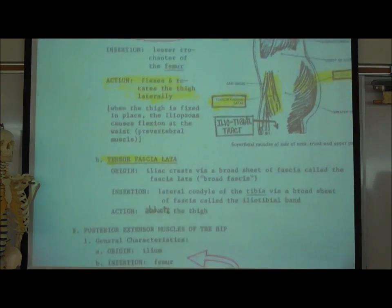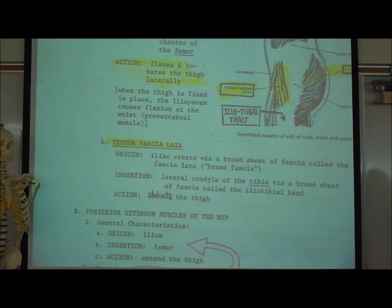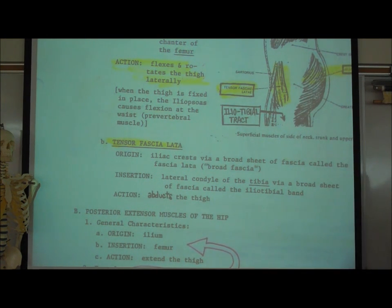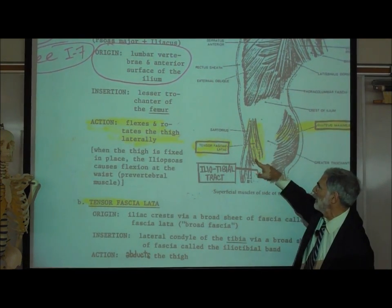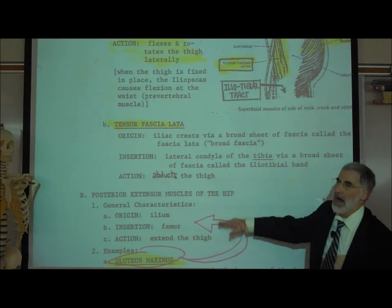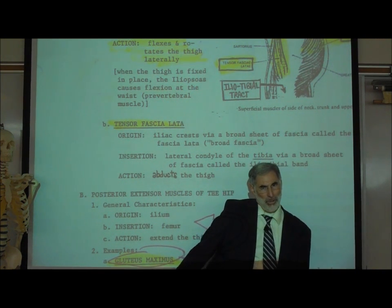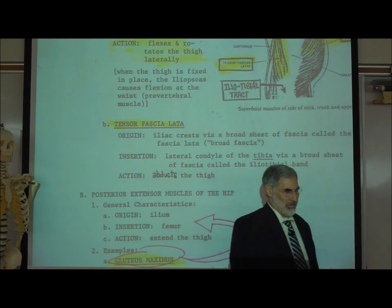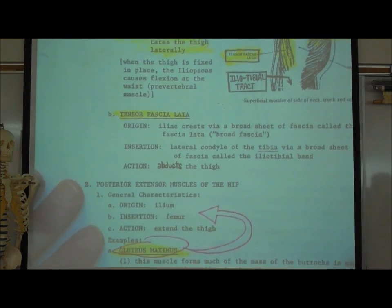A next muscle that I listed is the tensor fascia latae. A lot of people like to pronounce it tensor fascia latae. I think they've spent way too much time at Starbucks or something. It's not one of the more important muscles. It's an easy muscle to see. It's a small little muscle right here on the lateral side of the hip. It abducts the thigh. And you'd say, yeah, what does that mean? Abduct means to move away. So it pulls the thigh out, outwards. So as you abduct your thigh, that's what it does. And there are other muscles that abduct the thigh.